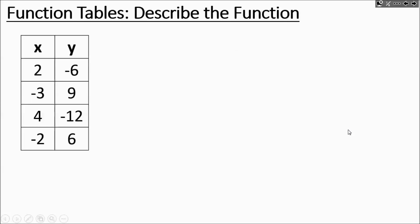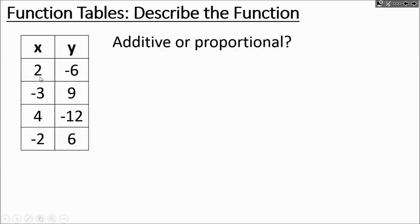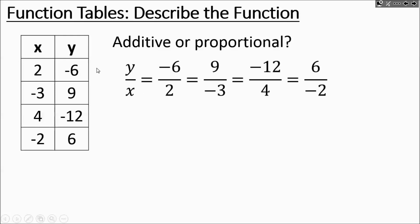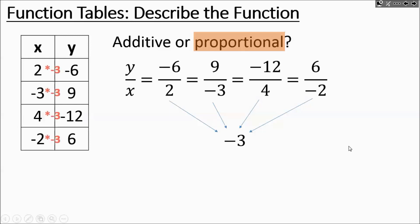Next table: is it additive or proportional? Negative 6 minus 2 is negative 8, and 9 minus negative 3 is 12 — those aren't the same, so it's not additive. It's probably proportional. Let's check our y over x ratios: negative 6 over 2 and 9 over negative 3. Taking all y values over their corresponding x values, they all work out to the same number: negative 3. So we're multiplying all inputs by negative 3 — it's proportional. The rule is y equals negative 3 times x.